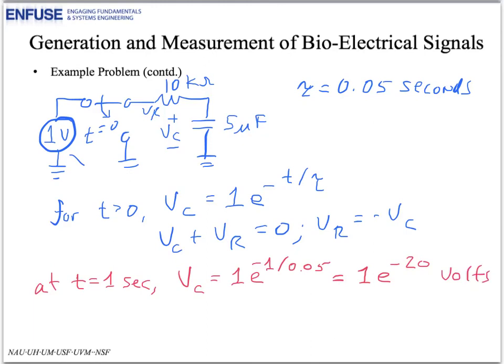So, after only 1 second with this time constant, and I've circled the time constant of 0.05 seconds, so we've actually waited 20 time constants, and the voltage has dropped to an extremely small value of 1 E to the minus 20.